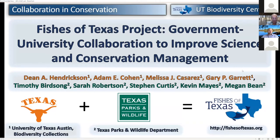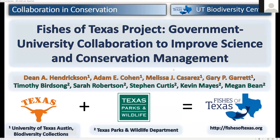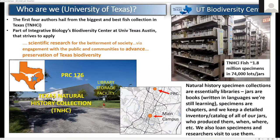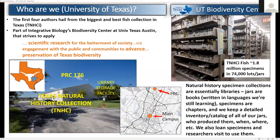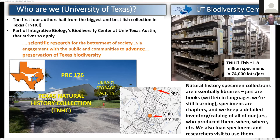Thank you, Christy. Starting with our title slide, I'll point out the authorship and the color coordination with the different logos — it reflects a very solid partnership. We're all about fish collections here at UT. I want to say a little bit about the fish collection and the value of specimens. We're in Austin, at the Pickle Research Campus about eight miles north of main campus. We like to think of this collection as essentially a library — you can think of the specimens as books, written in languages we're still learning. We just learned about DNA, so we're still learning how to read our books. Just like a library, we have a detailed inventory of everything we have: who produced the specimens, when, where, and we loan them out to visitors as well.